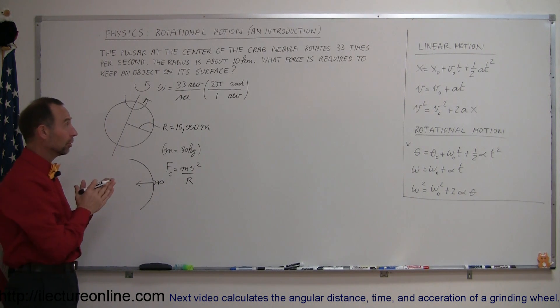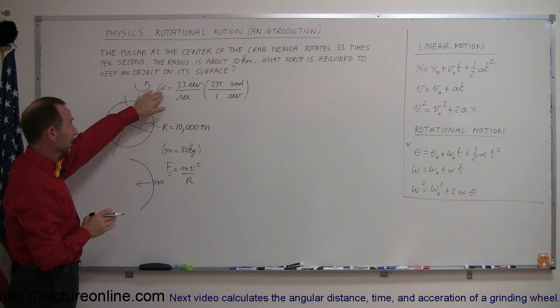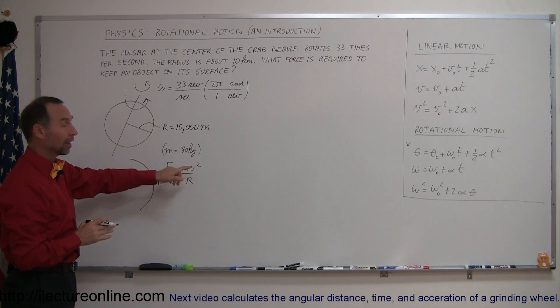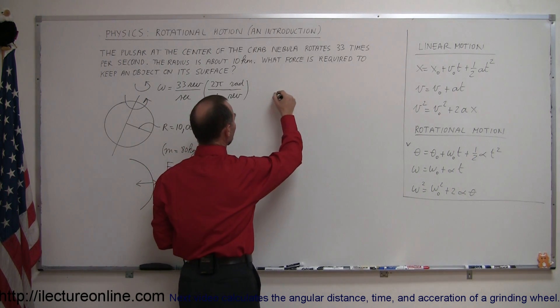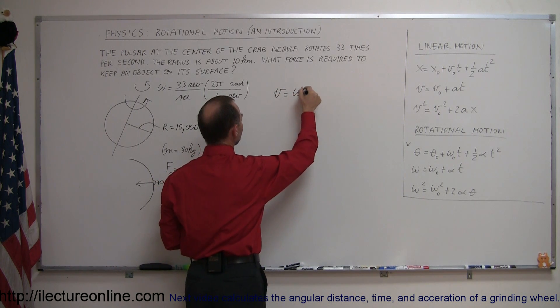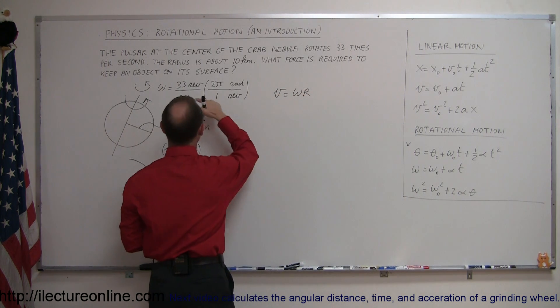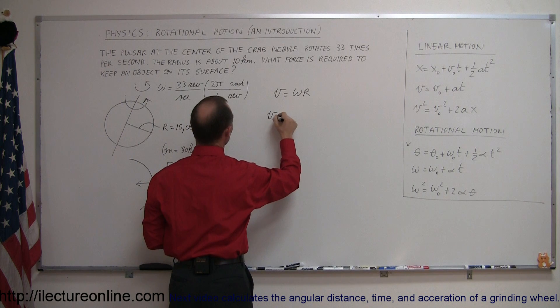Now we also have to have the conversion from angular velocity to linear velocity along the surface of that star. So we know that the linear velocity v is equal to omega times r, so we then go ahead and grab this.